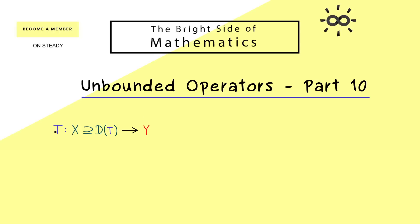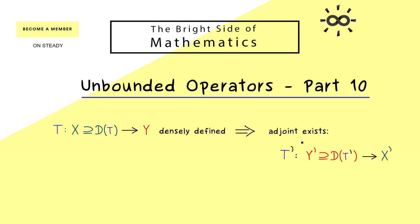Without further ado, let's immediately start with the linear operator T between two Banach spaces X and Y. We have to give a domain of definition, and if this subspace is dense in the Banach space X we say that the operator is densely defined. From the last two videos, under these conditions the adjoint operator exists, i.e., it's well defined as a linear operator from the dual space Y-prime to the dual space X-prime. This T-prime is the common notation in the case that X and Y are Banach spaces.